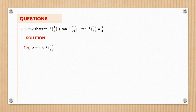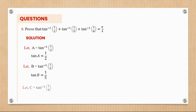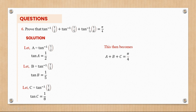The first step is to let a be tan inverse of one half, meaning tan of a is one half. Then let b be tan inverse of one over five, meaning tan of b is one over five. Then let c be tan inverse of one over eight, meaning tan of c is one over eight. So this becomes a plus b plus c equals pi over four — remember we are proving, but we first replace those values with a, b, and c.